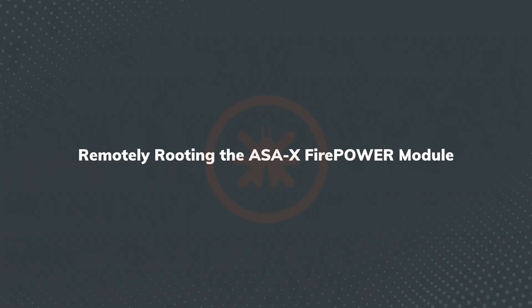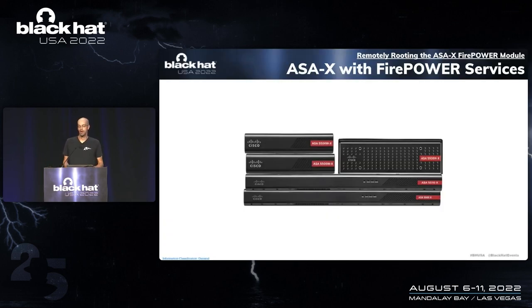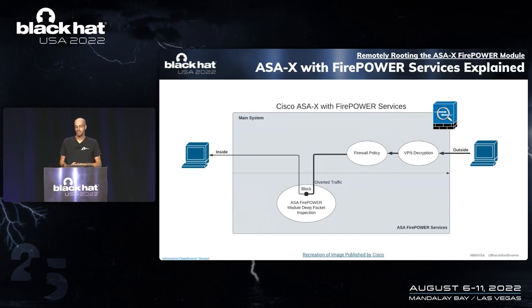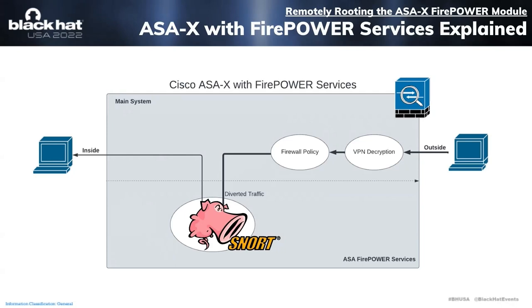That's all we're going to focus on for ASDM hackery. The rest of this talk will focus on a particular model of ASA called the ASAX with Firepower Services, and in this first section we're going to get a root shell on the system over HTTP. The name Firepower Services describes a special feature — specifically an ASA Firepower Module for Deep Packet Inspection. What that Firepower module actually is is a virtual machine running SNORT. Essentially, Firepower Services is an IPS installed directly on the ASA itself, and from the diagram we can see incoming traffic is diverted through the virtual machine for analysis.